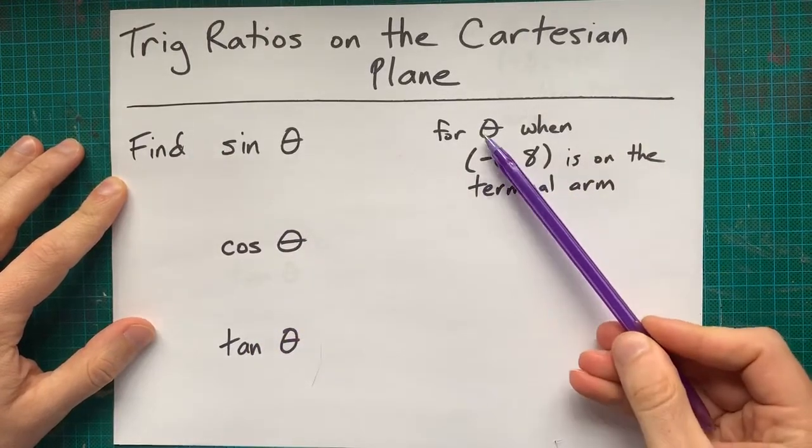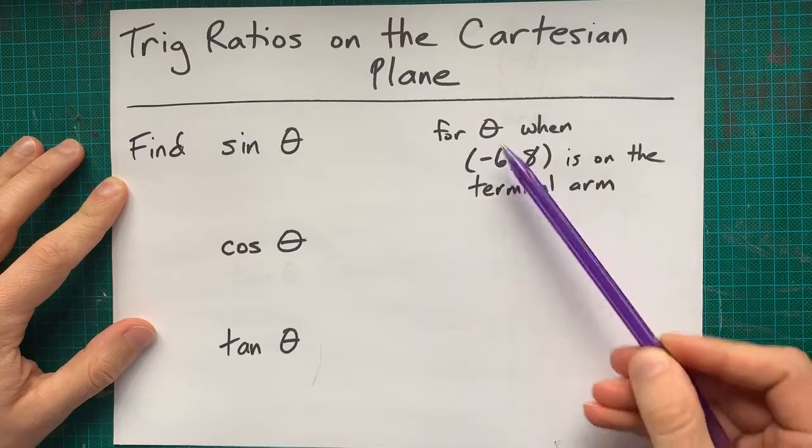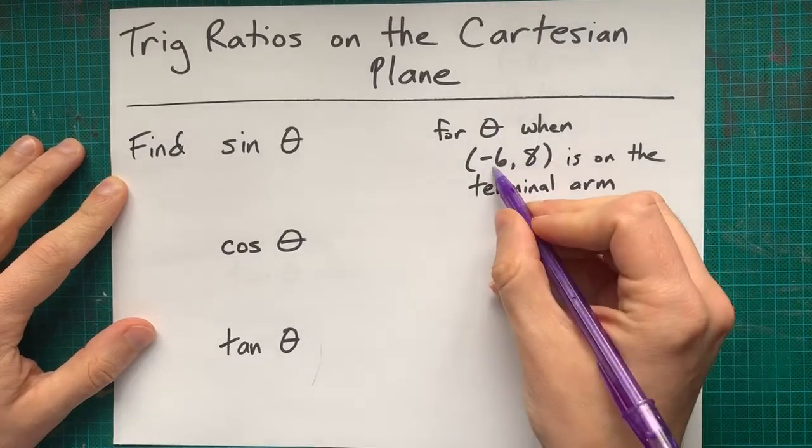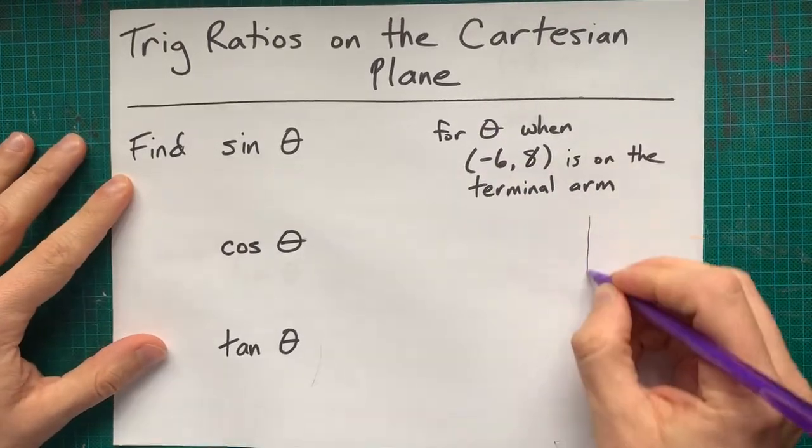and only be told a point that the terminal arm goes through. The point negative 6 and 8, for example,